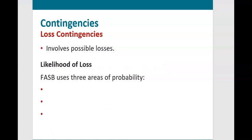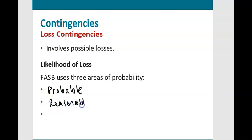Loss contingencies involve possible future losses, and the accounting for loss contingencies depends on two things: the likelihood of the loss and the ability of the company to make a reasonable estimate of the amount of the loss. GAAP defines three areas of probability: probable, reasonably possible, or remote.